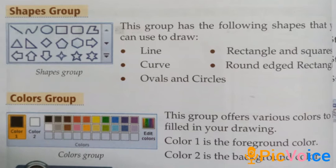Shapes group: this group has the following shapes that you can use to draw — line, rectangle and squares, curves, round-edged rectangles, ovals and circles. Colors group: this group offers various colors to be filled in a drawing. Color 1 is the foreground color and color 2 is the background color.